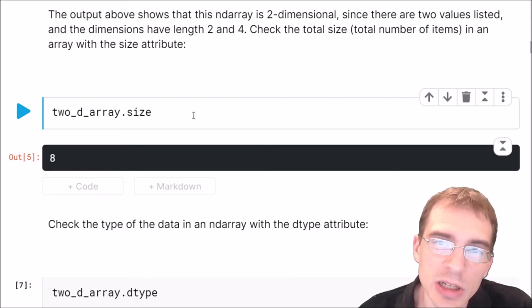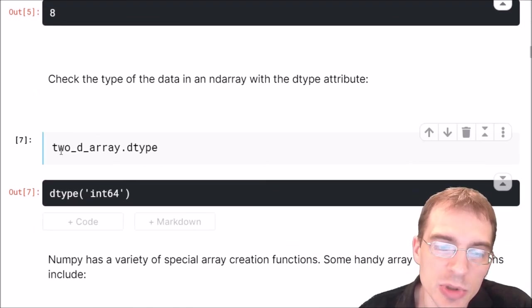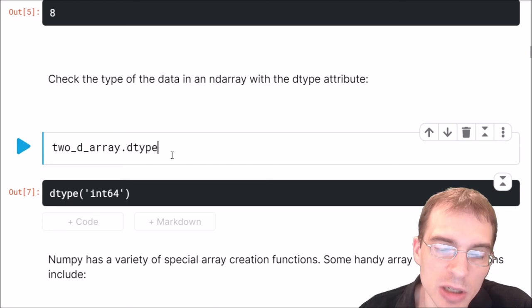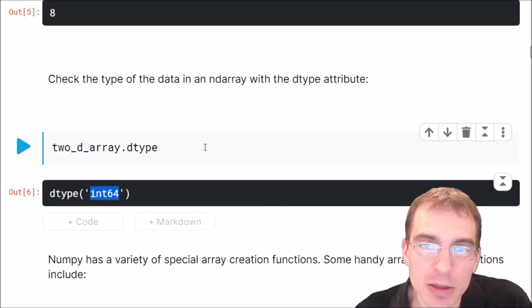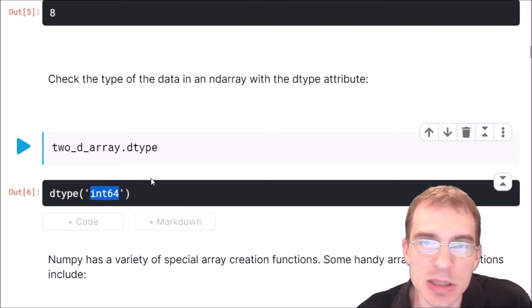You can check the type of data held in a numpy array with the dot dtype attribute. Here we can see the array we're working with is int 64. That means it's a 64 bit integer.